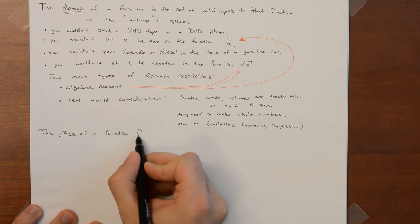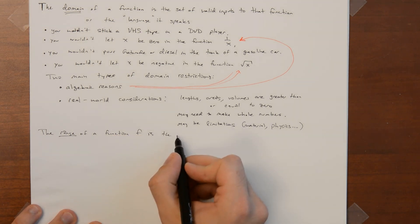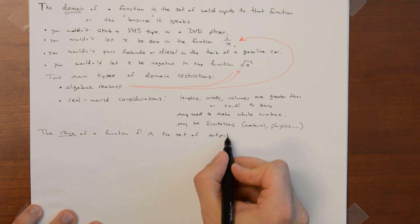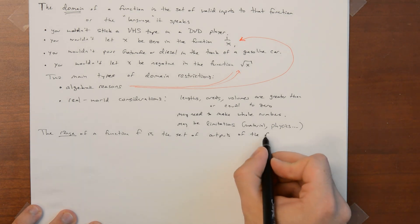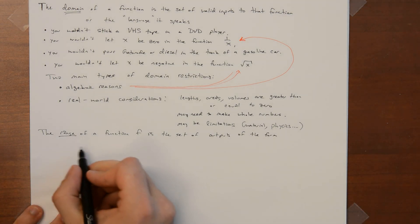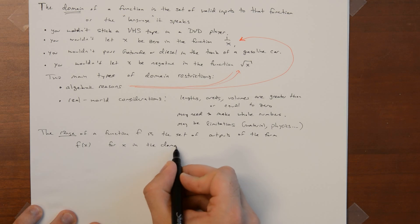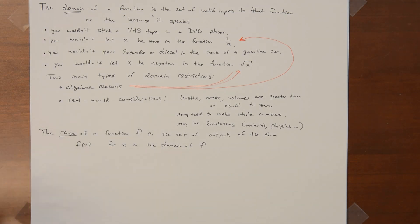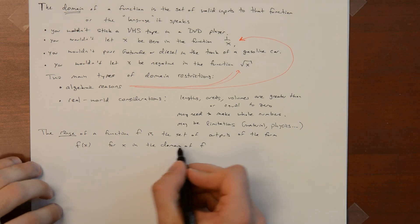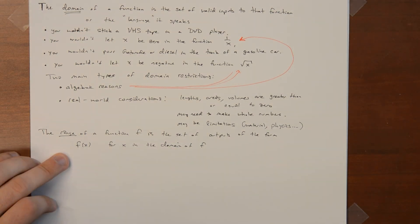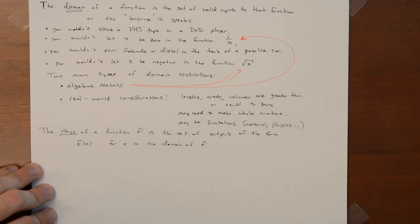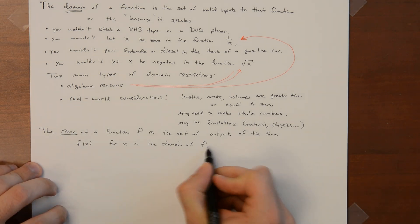the actual outputs of the function. So the range of a function, f, is the set of all outputs of the form f of x where x is in the domain. Whenever I write f of x, you implicitly understand that that input x has to be in the domain of the function. Otherwise, it just does not make sense. It makes as much sense as sticking a VHS tape in a CD drive. So this is always understood. If I write f of x, x has to be in the domain of the function. It's implicit.